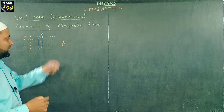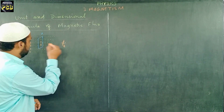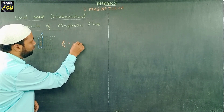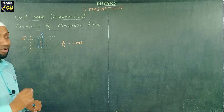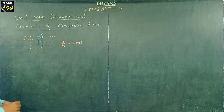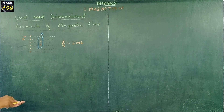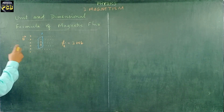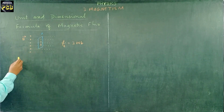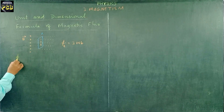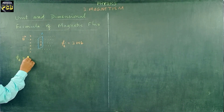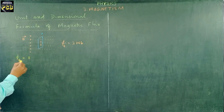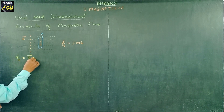Magnetic flux, which is represented by the letter Φ_B, is measured in Weber. Weber is the unit of magnetic flux — remember this. Magnetic flux is represented as the dot product of B vector and A vector.